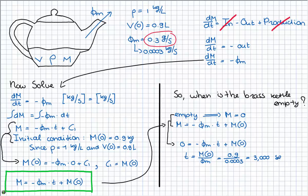And if I put this into my calculator, I get 3000 seconds. And this is actually 50 minutes. So I don't want to lose the brass kettle out of sight at all, actually.